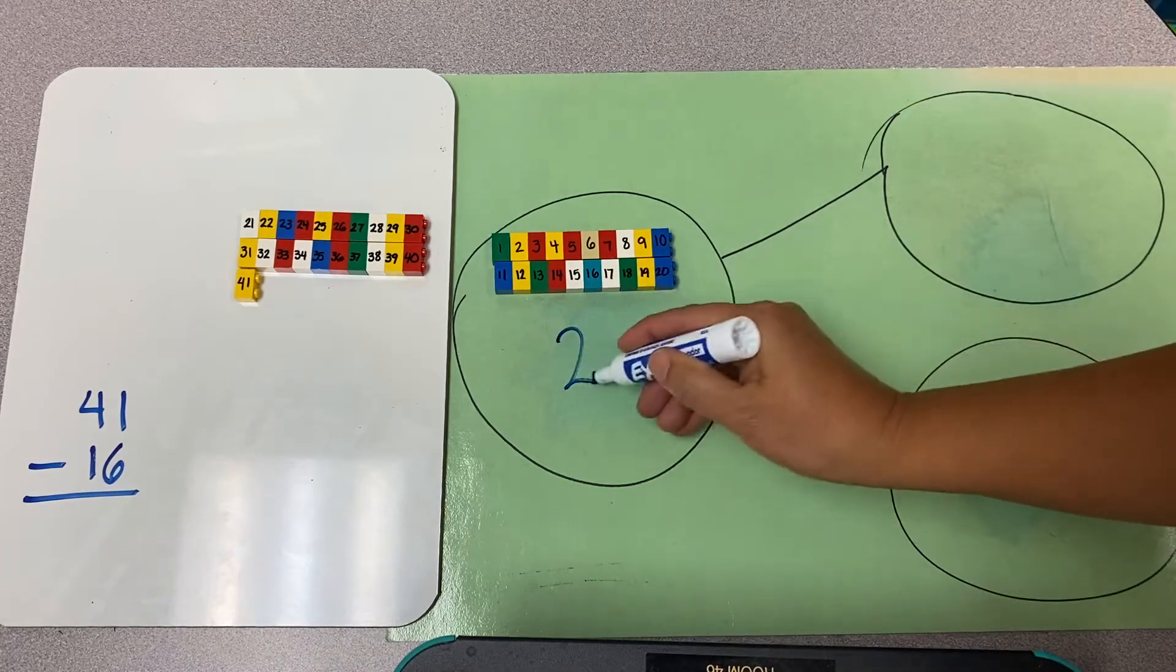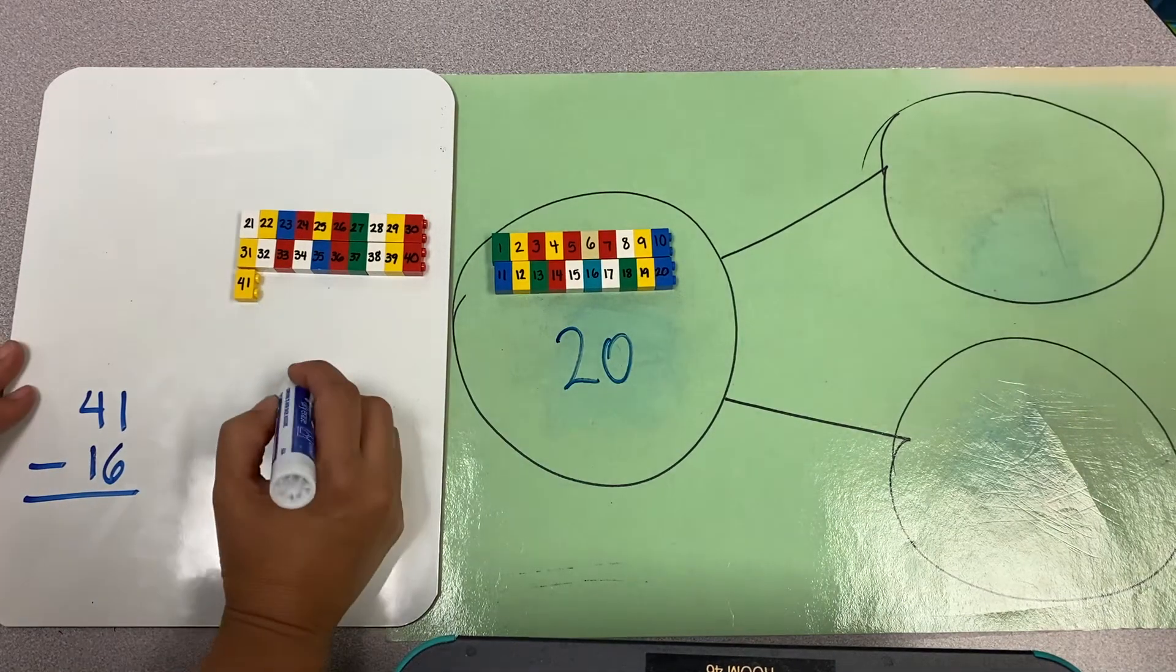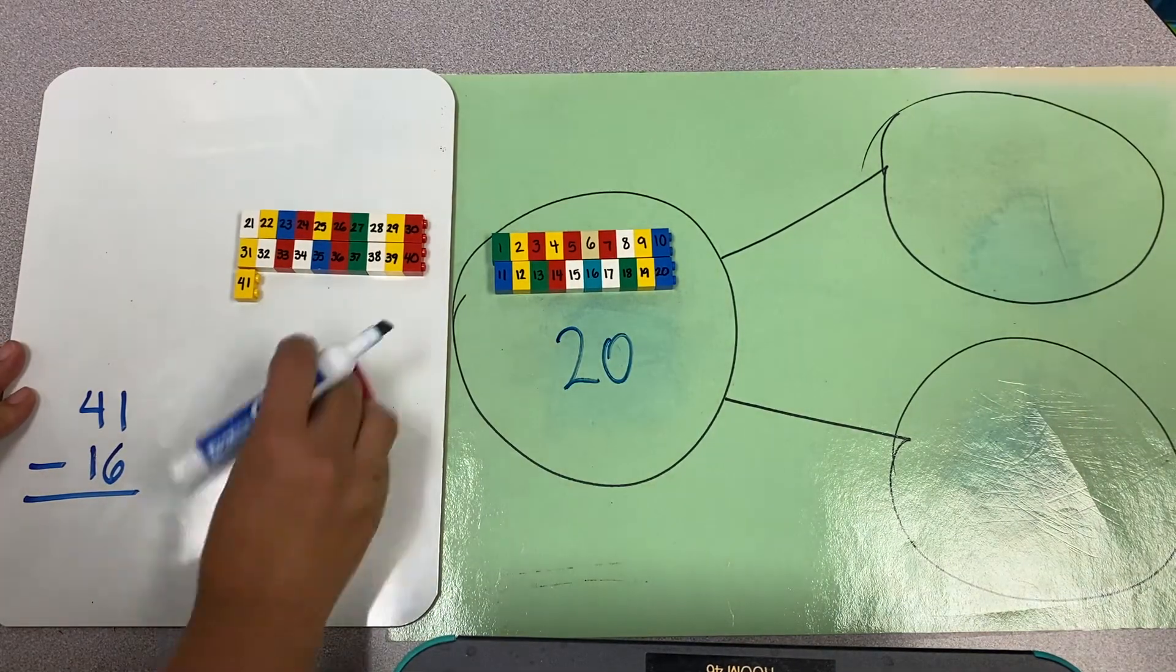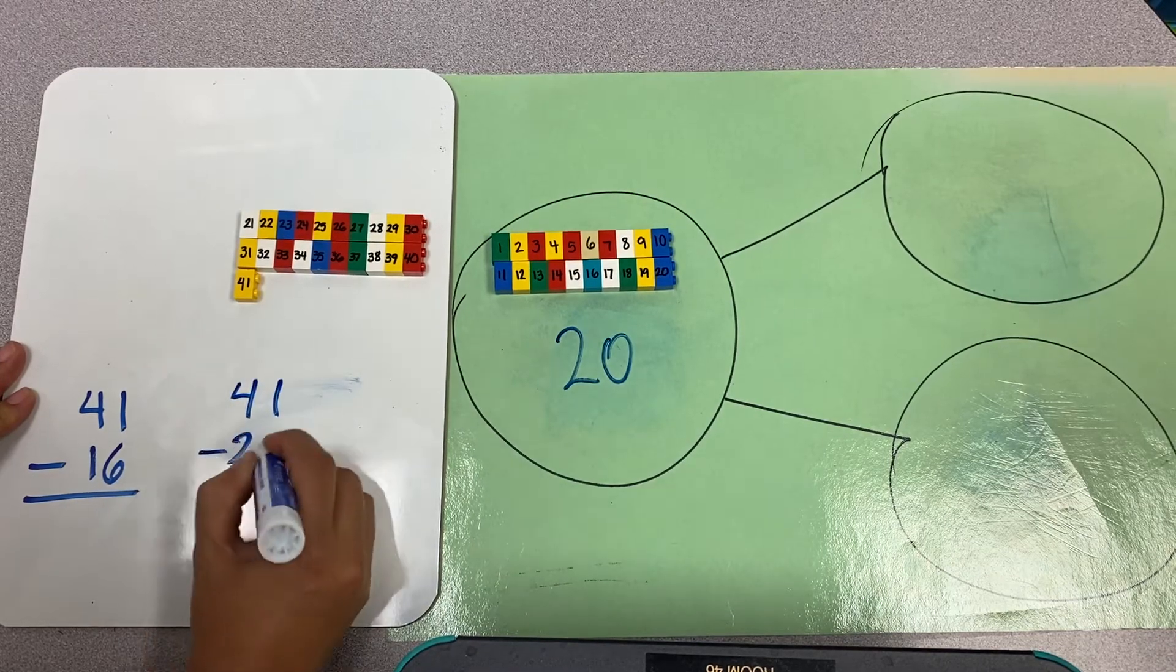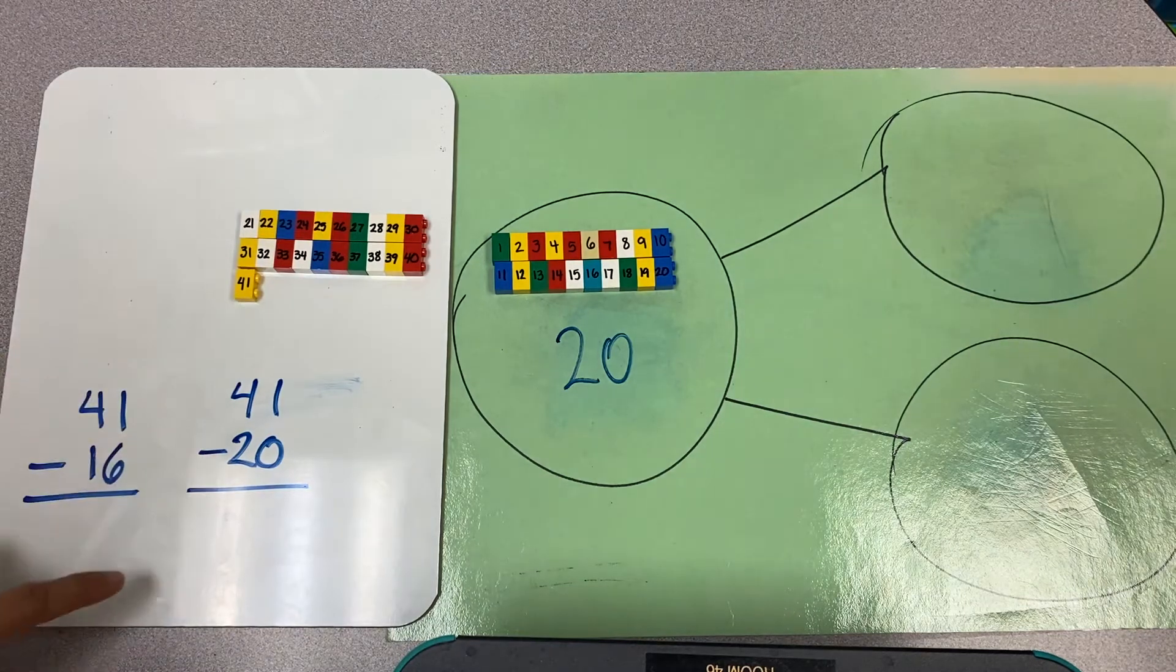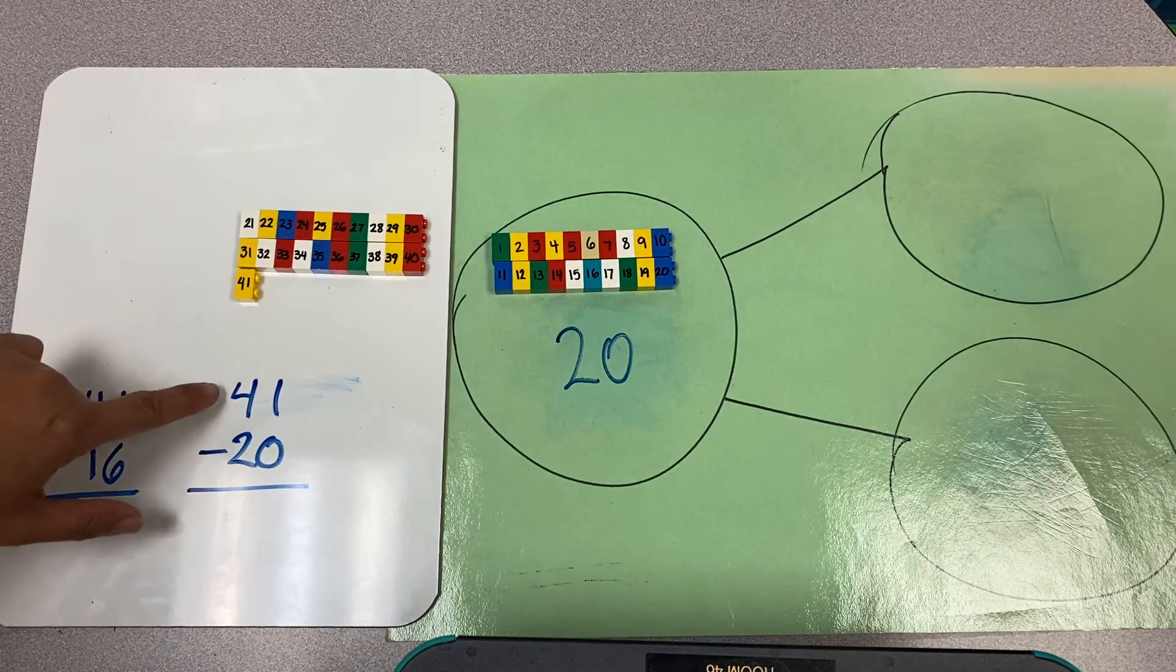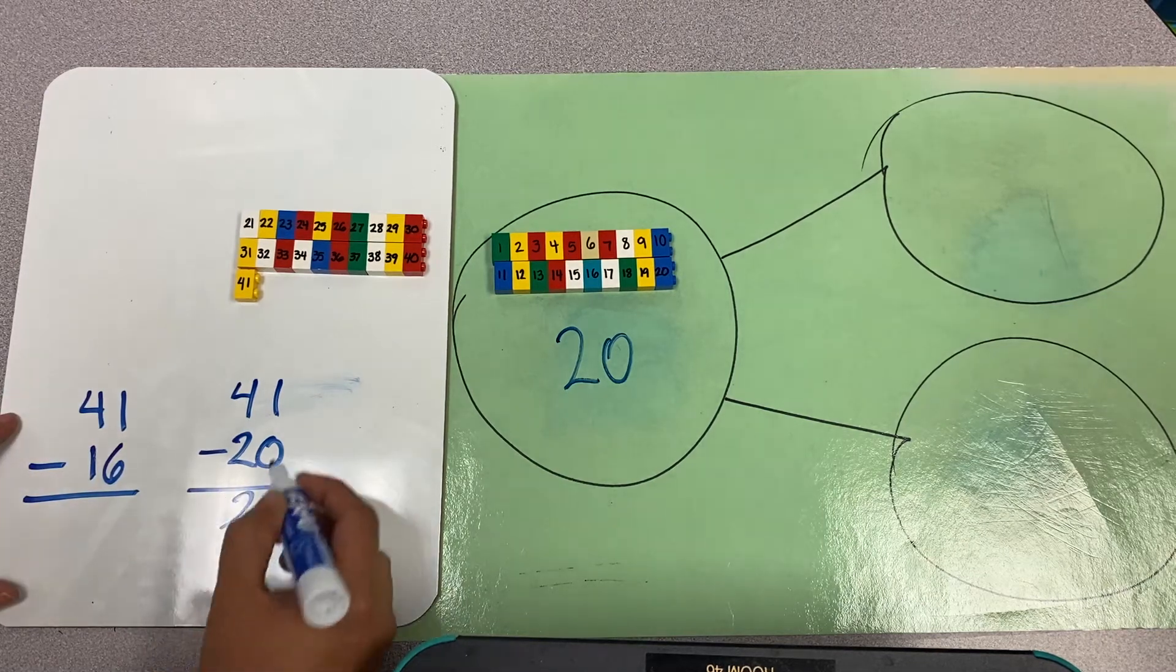I'm taking away 20, I'm not taking away 16 just yet. So I have 41 minus 20. You can say 41 minus 20, or you can say four tens take away two tens, which is two tens. The ones stay the same because I didn't have any ones to take away.